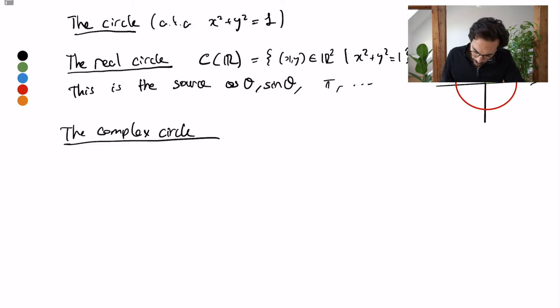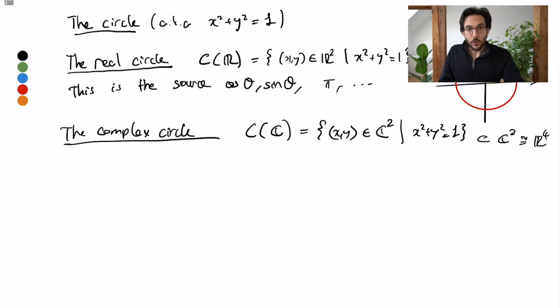Now let's talk about the complex circle. So that's the set of solutions C(C). These are two-tuples x,y in C², so the complex plane such that x squared plus y squared equals 1. An interesting feature about this is that clearly this lives in C² which of course is four dimensional from a real point of view.